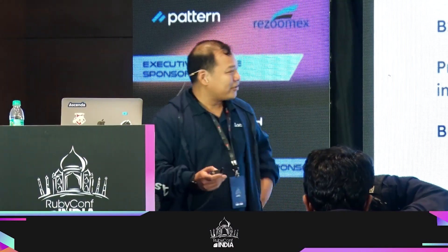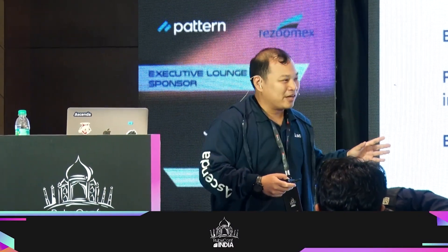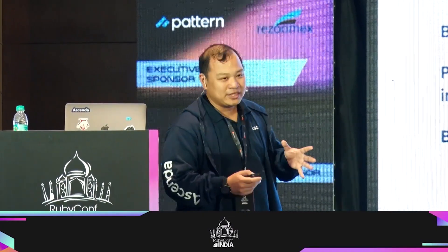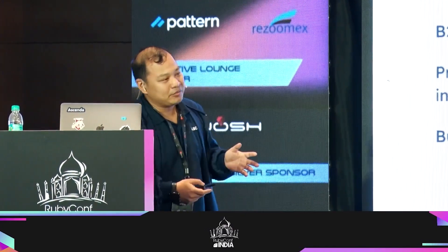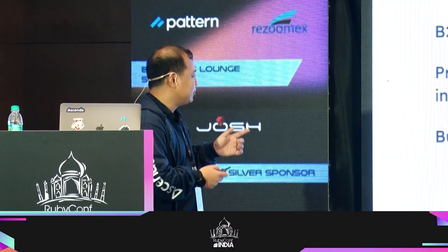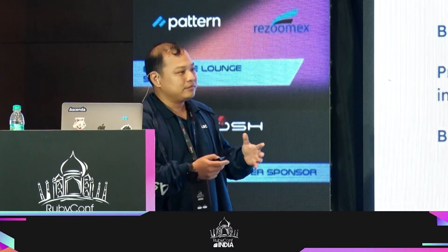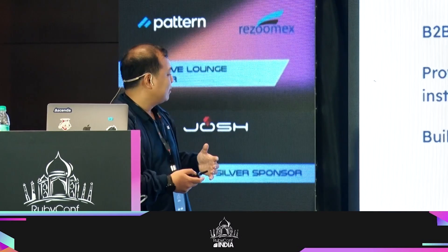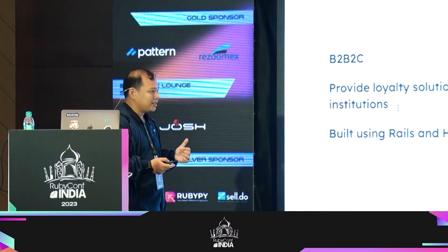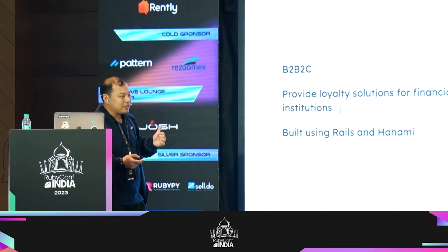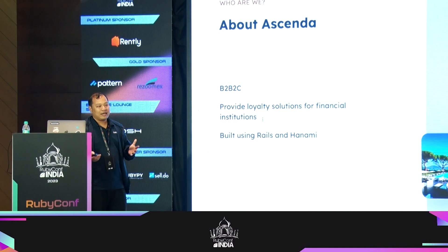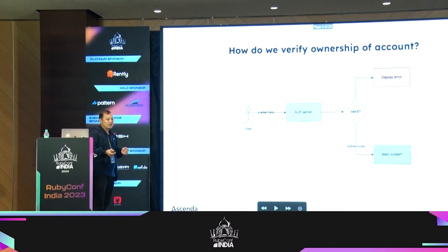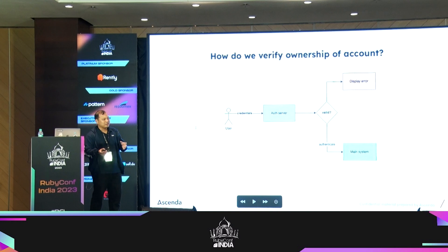Before that, let's talk a bit about my company. It is called Ascenda Loyalty. It is basically a B2B2C business. It builds loyalty programs for financial services like banks. We build using Rails and Hanami. Because our clients are banks, they are pretty particular about protecting user accounts.